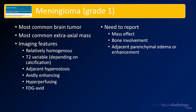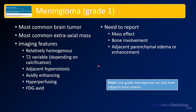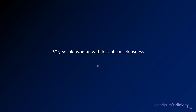Meningiomas are the most common brain tumors and the most common extra-axial mass. They tend to be homogeneous, can be T2 variable but often T2 hyperintense, and you might see hyperostosis. They can be hyperperfusing and FDG-avid, so don't let that confuse you into thinking it's definitely a metastatic lesion. Report how much mass effect there is, bone involvement, and adjacent parenchymal edema or enhancement — these are concerning features. This case turned out to be a grade one meningioma. Low-grade meningiomas can also have edema — that doesn't mean brain invasion or high-grade tumor. Avoid the word 'atypical' as it specifically refers to other subtypes of meningioma.